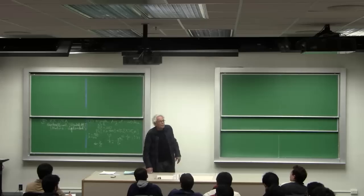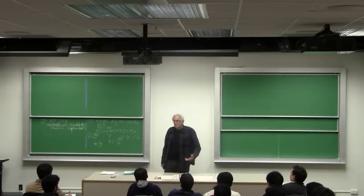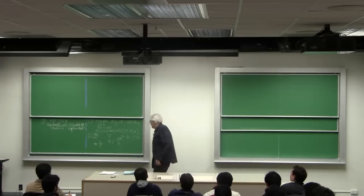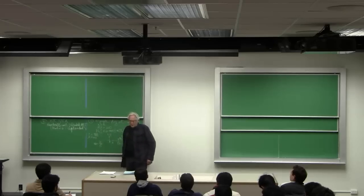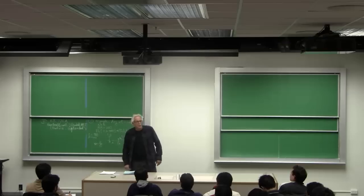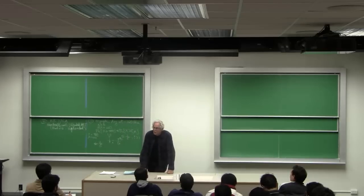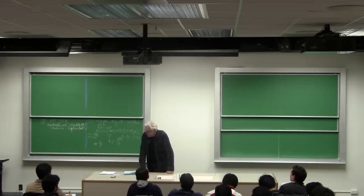And we'll throw away the worst half of the code words by appealing to Markov's inequality to show that we only have to throw away half of the code words to make sure that the best of them are uniformly small in conditional probability of error.